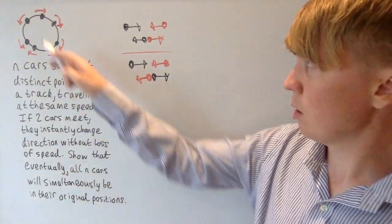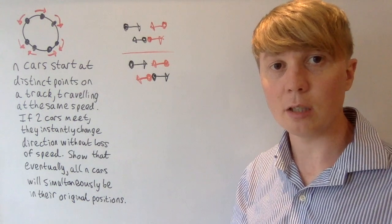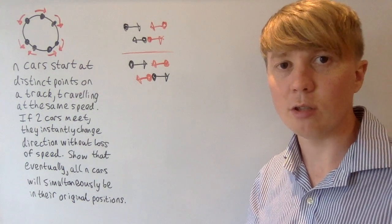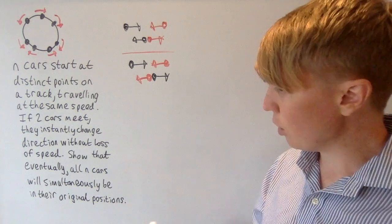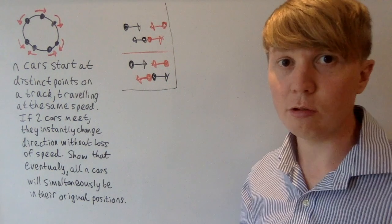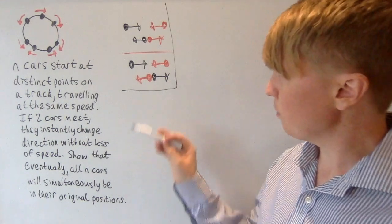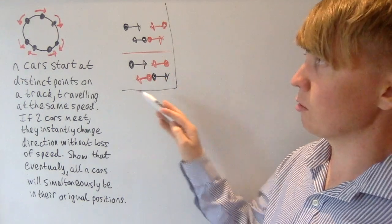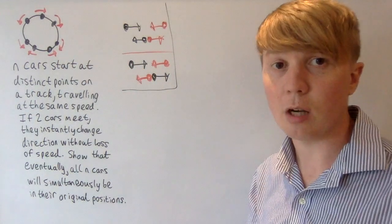because we don't want to have just some cars in the original position, we want to have every single car in its original position. But still we can get some partial progress on the problem here, using this idea of cars passing through each other. So you can say that because this idea of cars passing through each other is somehow equivalent if you don't care which car is which,